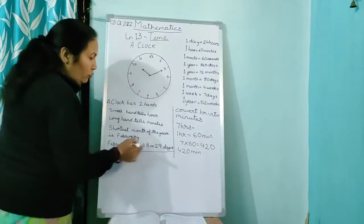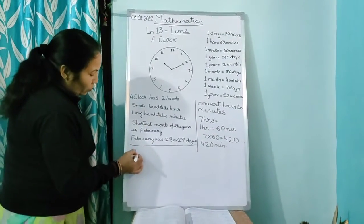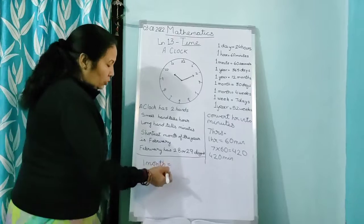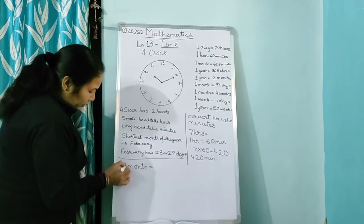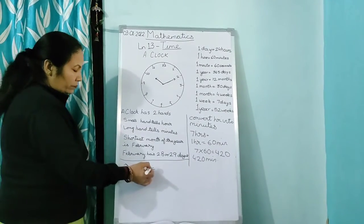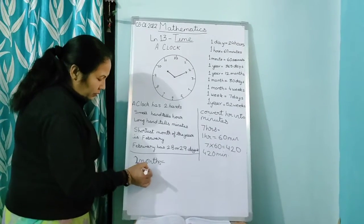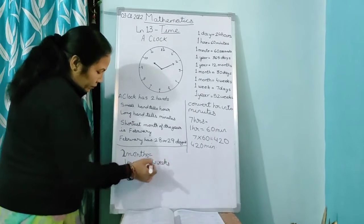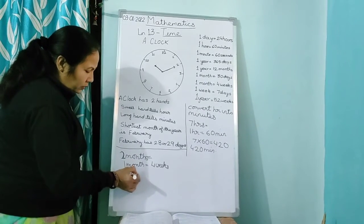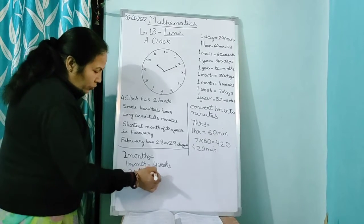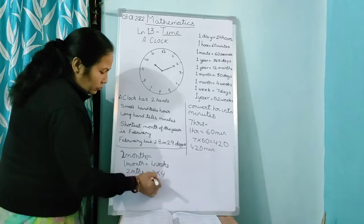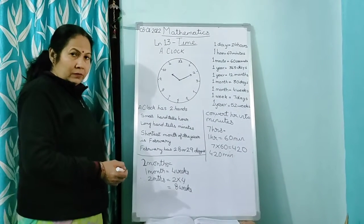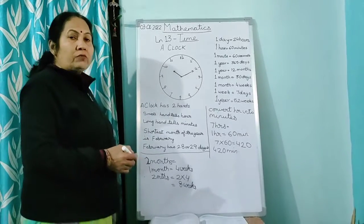Now next, if you have to convert months into weeks, so 2 months. Now you will write 1 month is equal to 4 weeks. Therefore, 2 months, here I am writing the short form of months, is equal to 2 into 4 is equal to 8 weeks. So children, this is how you have to solve the sums.